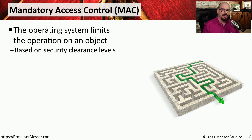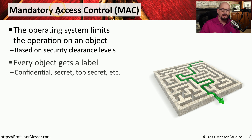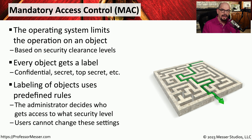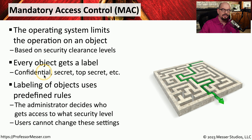If you're working in a highly secure area, you may be working with an access control called a mandatory access control. Mandatory access control assigns a label to each resource that someone may need access to. So a particular file or folder may be tagged as confidential, secret, top secret, or a number of other types of mandatory access control labels. One important aspect of mandatory access control is that the administrator of the system is the one that defines what type of rights and permissions a user might have. So a user in the shipping and receiving department may have access to confidential data, but someone higher up in the management chain might have access to top secret data.